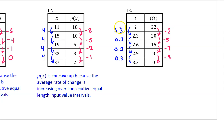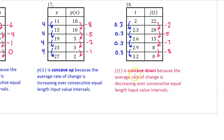For number 18, these are the input value changes and the output value changes. The output value changes are decreasing — they are getting more negative. Since we have consecutive equal length input value intervals, the average rate of change is also decreasing. Therefore, j of t is concave down because the average rate of change is decreasing over consecutive equal length input value intervals.